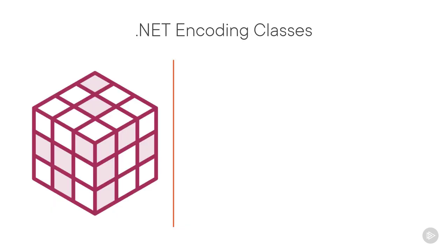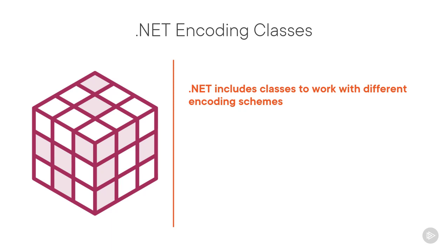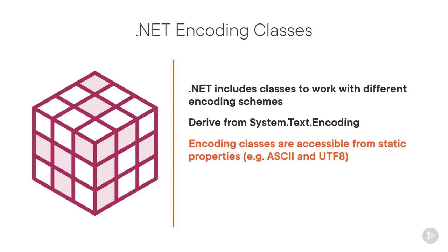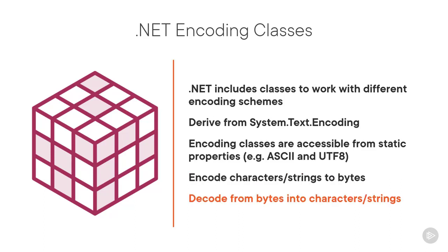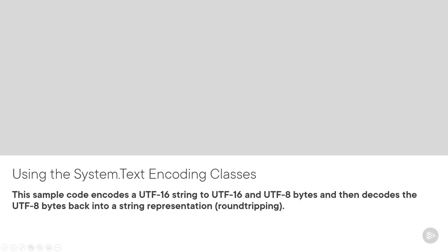.NET includes many encoding classes to handle different encoding schemes and to convert between encodings. These classes derive from an abstract base encoding class in the System.Text namespace. We may access the different encoding classes from static properties on the encoding base class, such as ASCII or UTF-8. These classes may then be used to encode chars or strings to the correct byte representation, and can also decode back from bytes to the char or string representation. Let's focus on a short example of the encoding APIs in .NET.